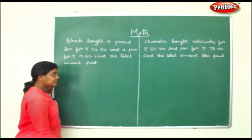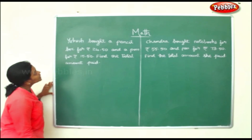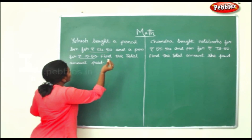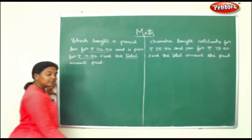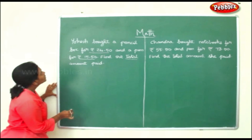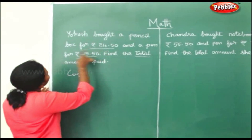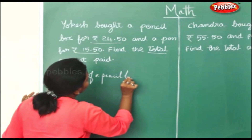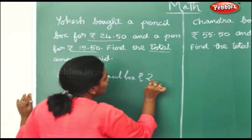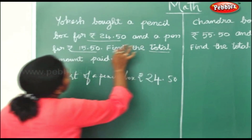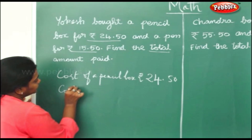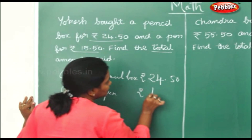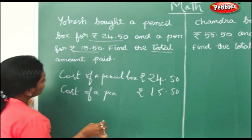Now let us see some word problems in money. Yokesh bought a pencil box for rupees 24.50 and a pen for rupees 15.50. Find the total amount paid. 'Total' is the clue word for addition. Cost of the pencil box is rupees 24.50 and cost of the pen is rupees 15.50. Find the total amount paid.